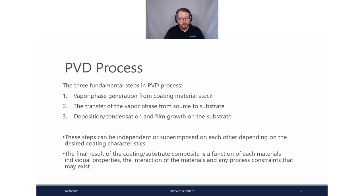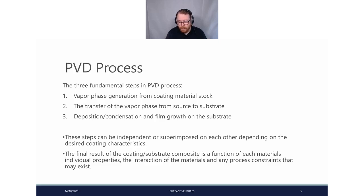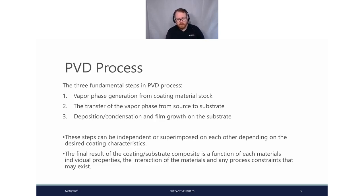The various methodologies accomplish these steps in different ways — some can be superimposed on one another. This produces a composite of substrate and coated material. These are complex things to study; the interactions are partly dependent upon the substrate material in terms of load support — how hard the coating is, how thick the coating is — all the sorts of things discussed in surface engineering journals.